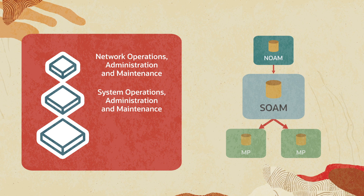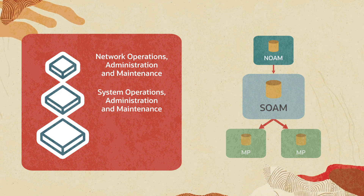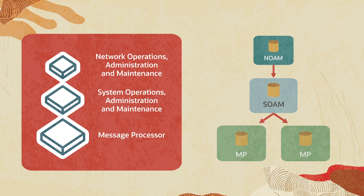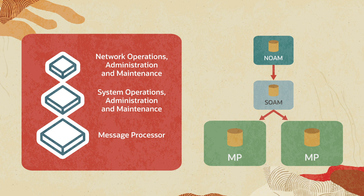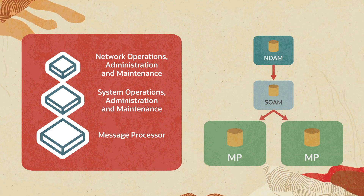The second layer, Systems Operations, Administration, and Maintenance — SOAM — configures and manages diameter, TCP, and SCTP data. The third layer, Message Processor, or MP, processes signaling data in real time.